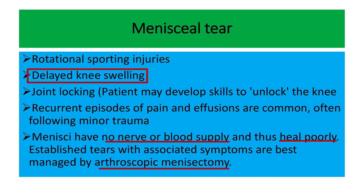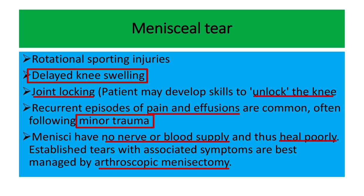Also, joint locking occurs in menisci tear, but sometimes patients are able to unlock the knee due to the habitual effect of repeated development of joint locking. Recurrent episodes of pain and effusion may develop following minor trauma — that means the patient has a menisci tear but ignores the condition. After a minor trauma, pain, swelling, or effusion develop.